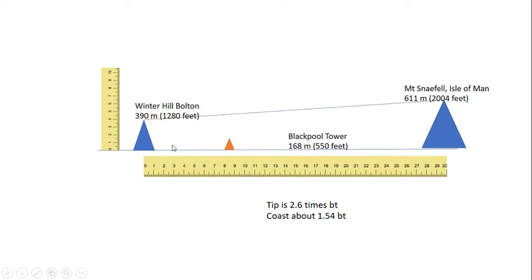If we draw a line from Winter Hill to Mount Snaefell, you can see that Blackpool Tower doesn't intersect with that line at all. It's a totally different line of sight. You actually have to look downwards from Winter Hill to see Blackpool Tower, and you look upwards to see Mount Snaefell.